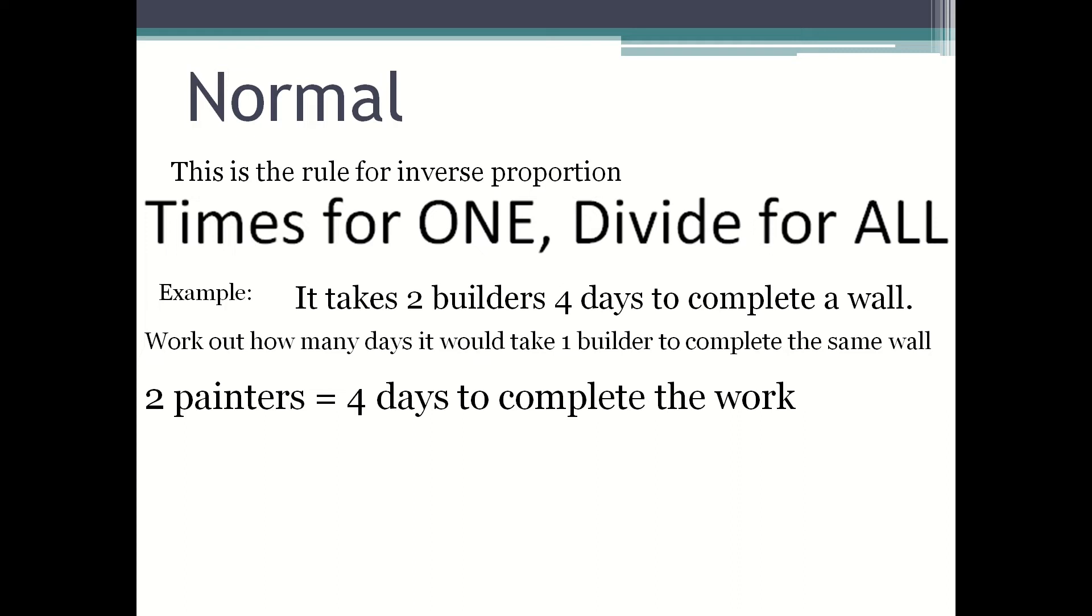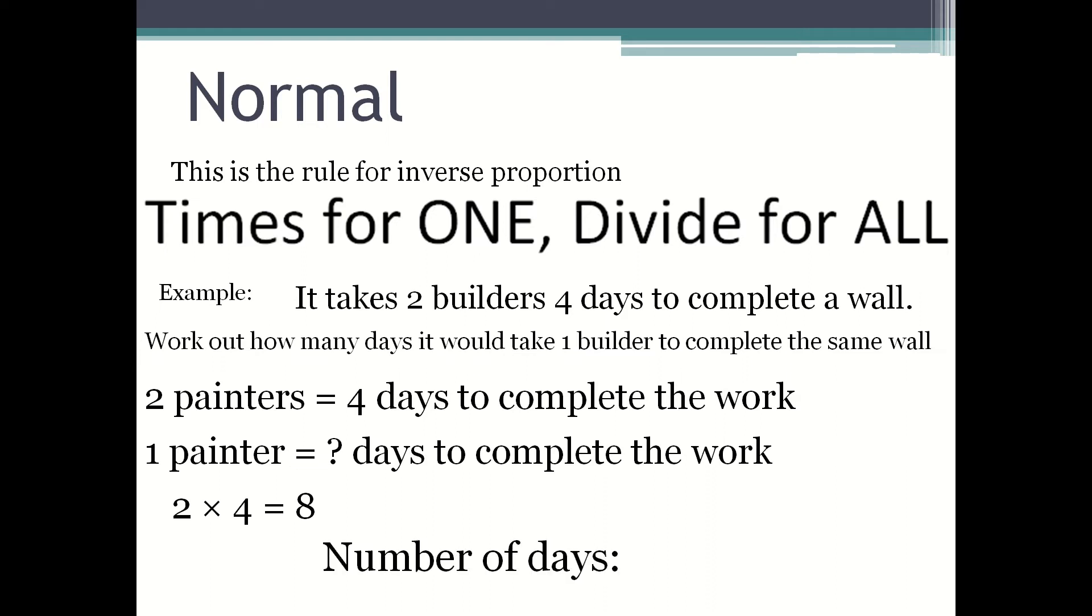Two painters equals four days, one painter equals question mark number of days. Since it's times for one, you have to times the number of builders or painters or whatever it is by the number of days. So there will be two times four which is eight, which means that the number of days it takes is eight days.